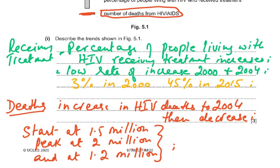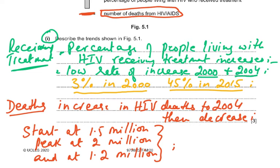When describing trends and there are two things on the graph, you must address both. The percentage of people living with HIV receiving treatment increased, with a low rate of increase from 2000 to 2004, starting at 3 percent in 2000 and reaching 45 percent in 2015. HIV deaths increased to a peak of 2 million around 2004, then decreased to 1.2 million by 2015, starting from 1.5 million. Always include figures when describing trends.